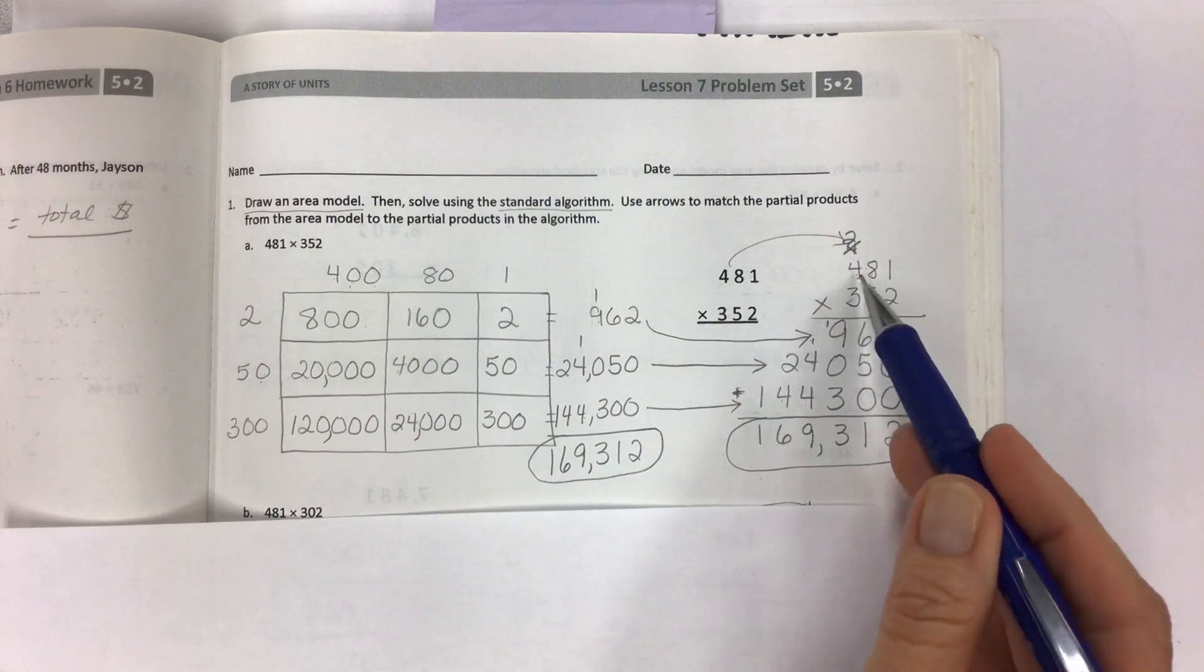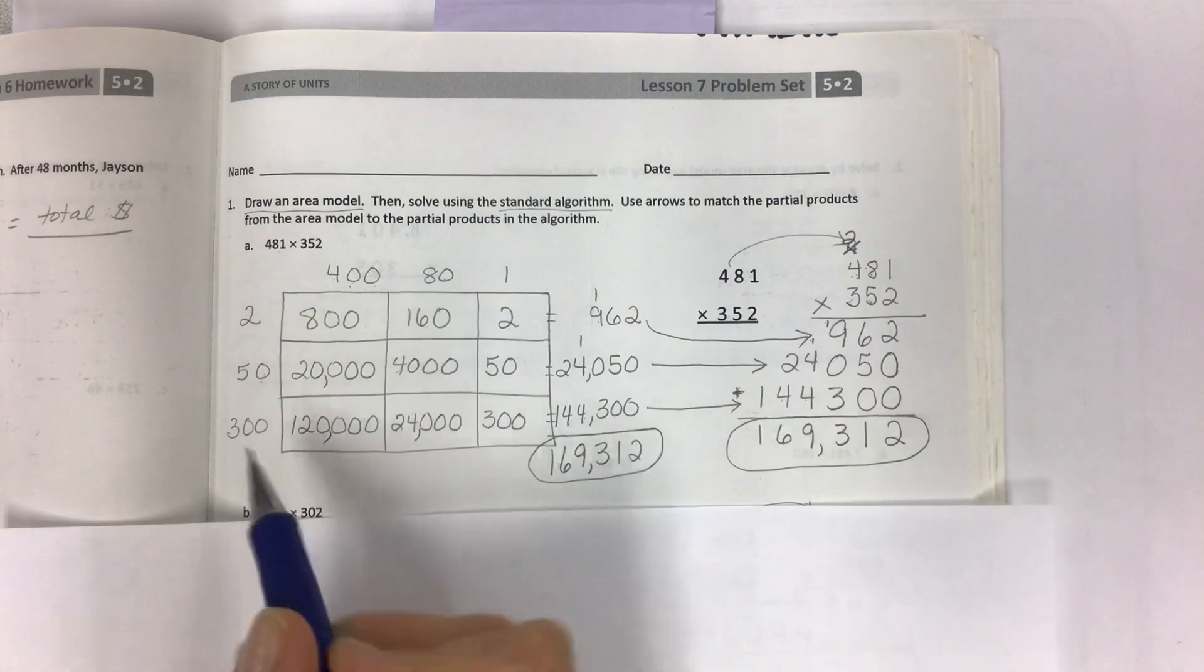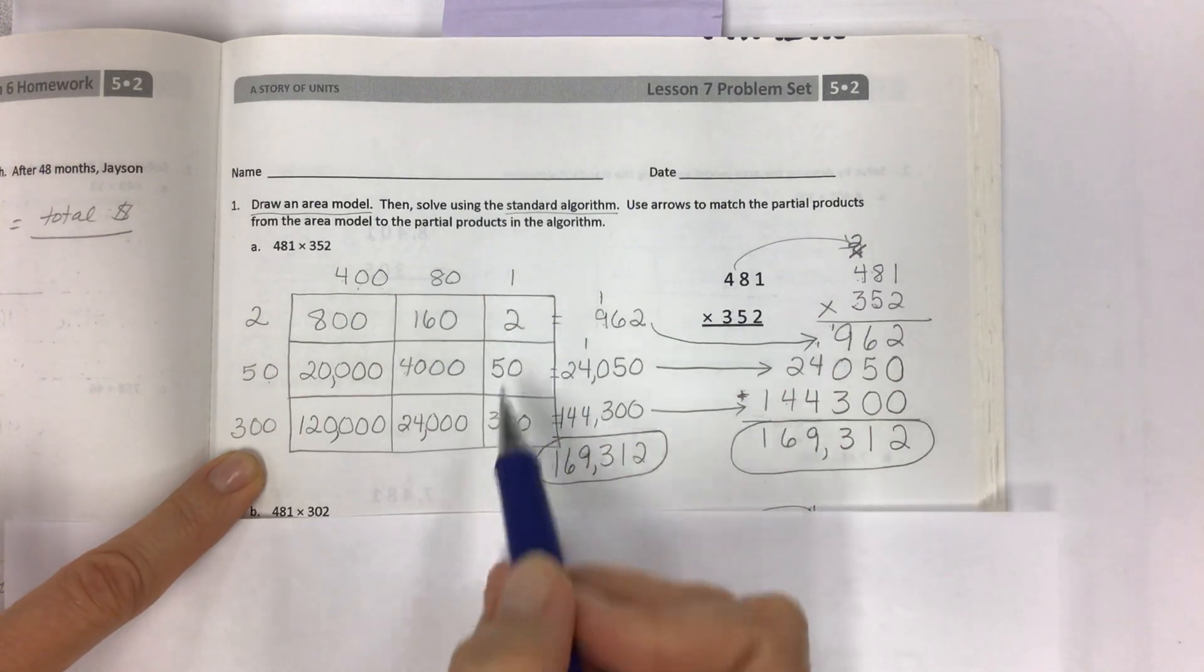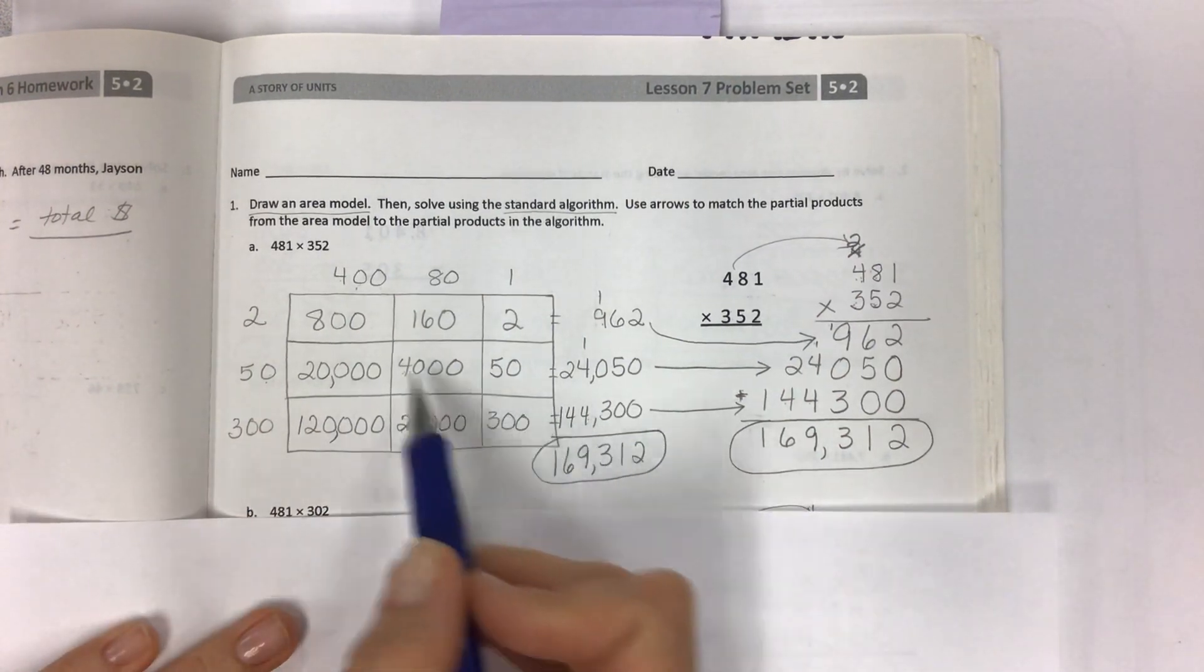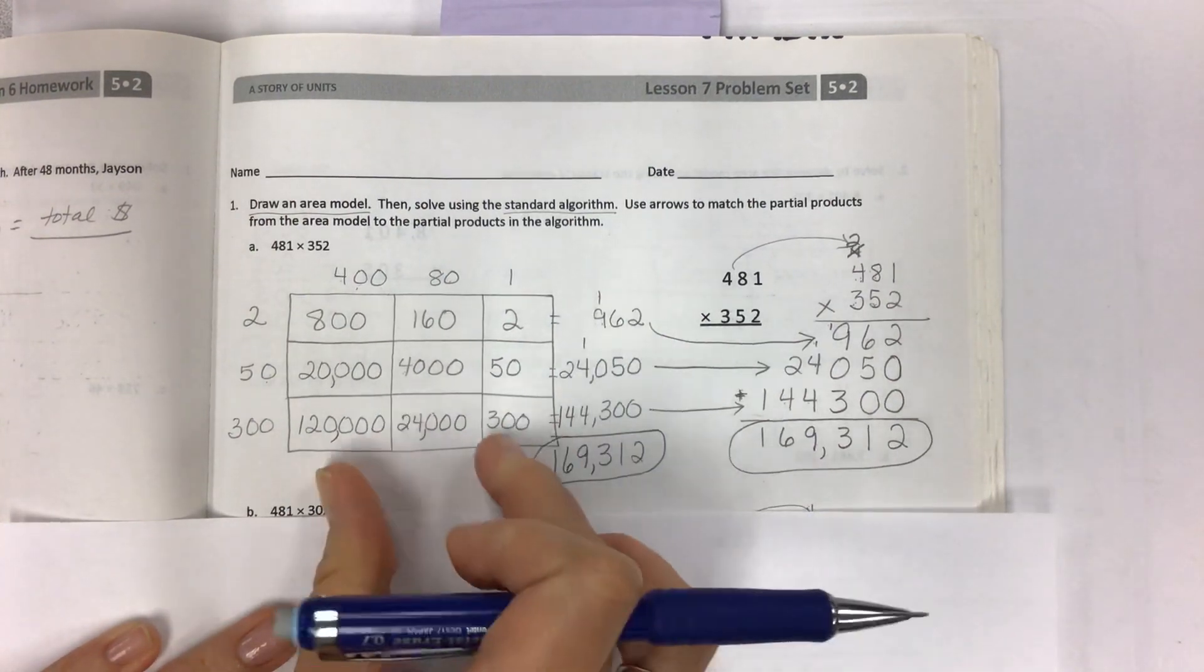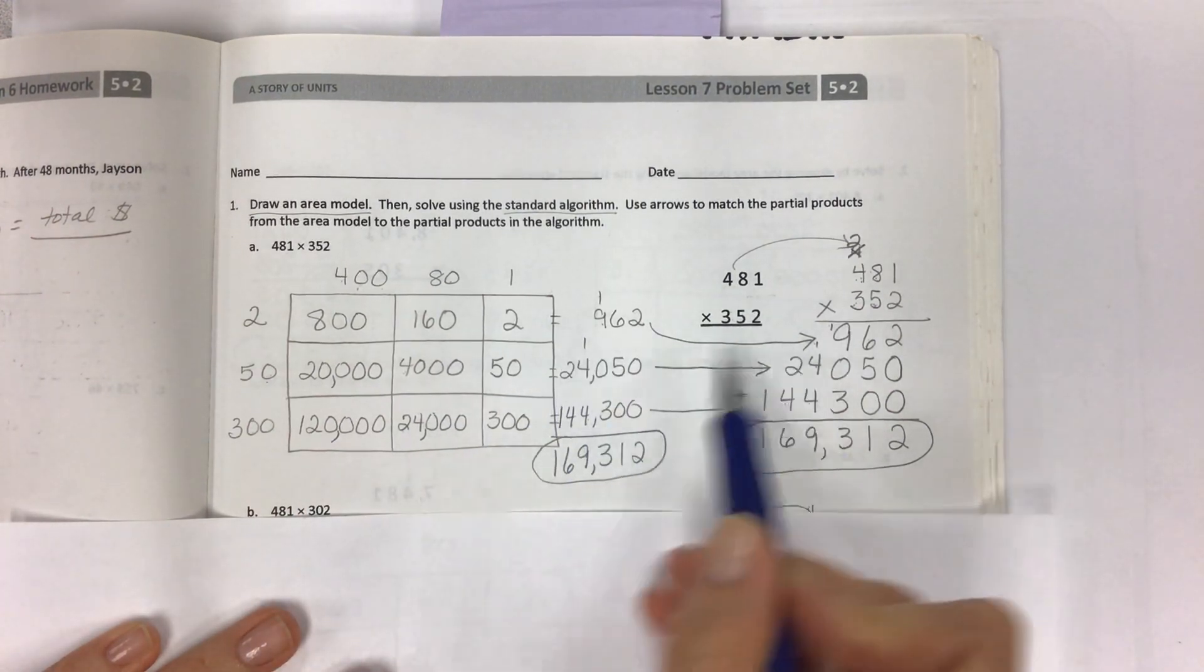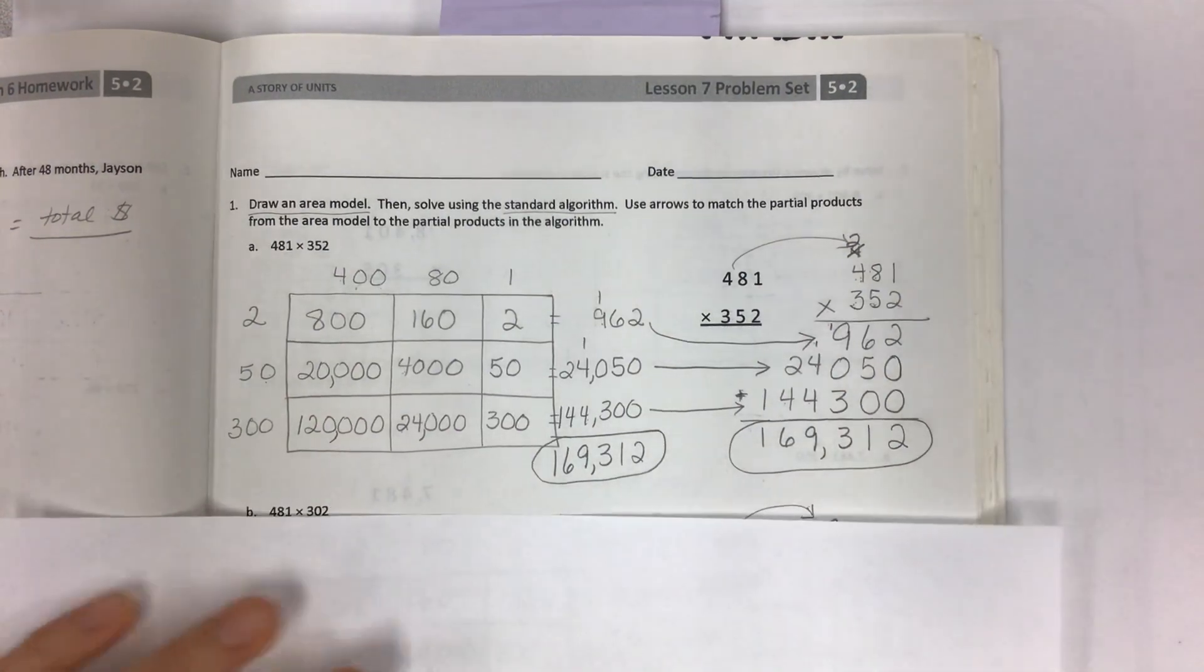And then 300 times 481 gives you 144,300 which you can find here. Four times three and the eight times three is 24 and 300 times one. So just check your work and make sure that you are carefully calculating within each place value position using the distributive property properly and then your partial products should connect across. Pause the video if you need more time.